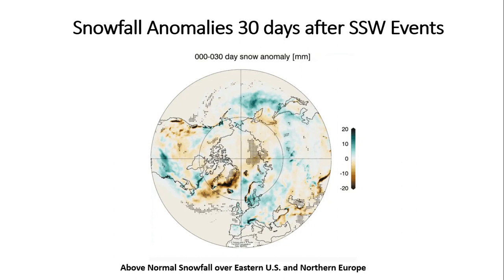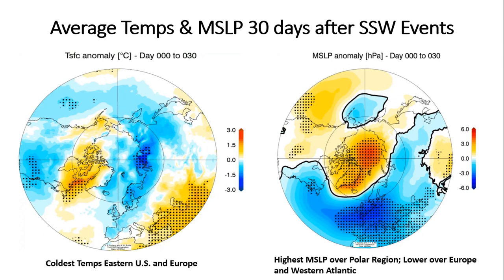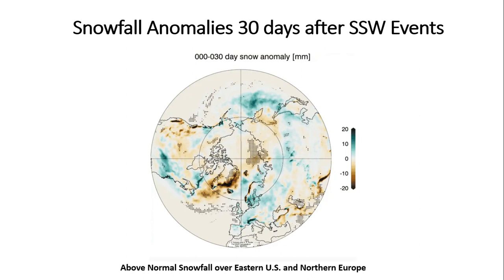Snowfall anomalies 30 days after sudden stratospheric warming events show green shading for above-normal snowfall and brown shading for below-normal snowfall. We generally see below-normal snowfall in the western United States and the higher latitudes of the North Atlantic into Greenland, and above-normal snowfall over the eastern United States and northern Europe. So SSW events impact surface temperature anomalies, mean sea level pressure anomalies, and snowfall anomalies.